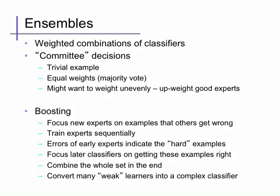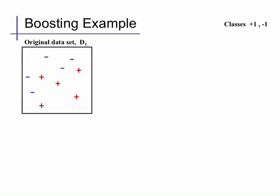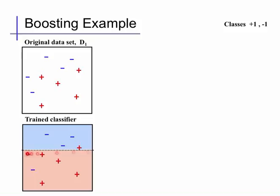Here's an example of boosting for classification. Suppose we have a data set with some plus-one class entries in red and some minus-one class entries in blue. We learn a classifier for these data, but we restrict ourselves to an extremely simple kind of classifier — a decision stump, a one-level decision tree. We learn this decision stump which splits on x2 at a certain point. This gets most of the points right, but it gets these two negative points wrong and this positive point wrong.